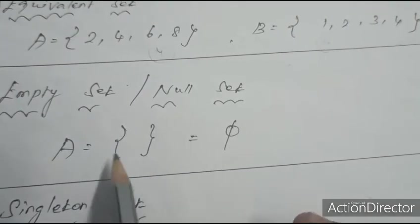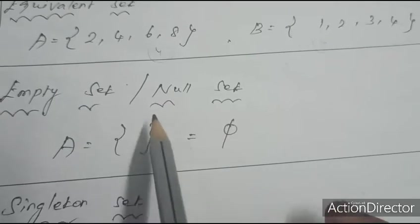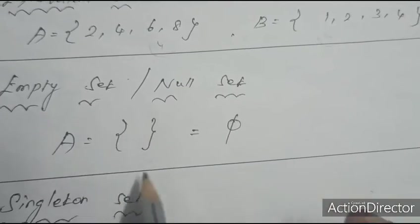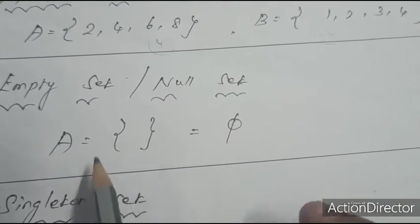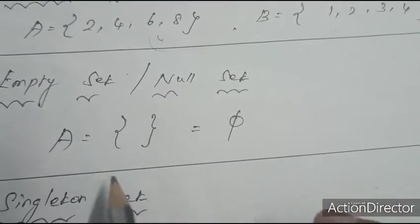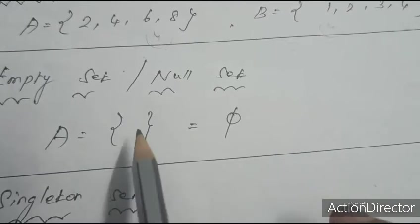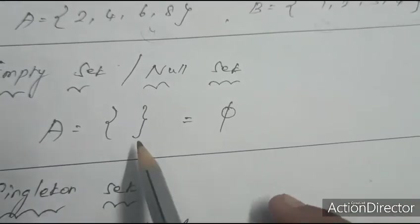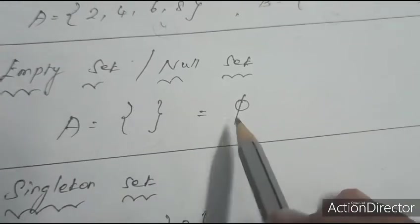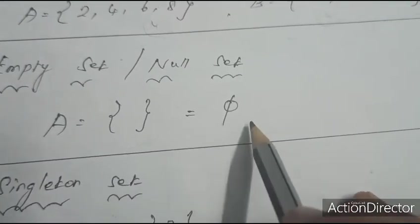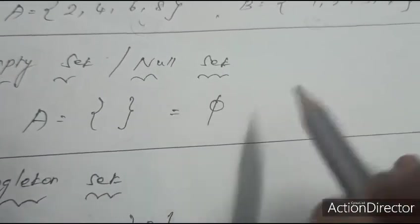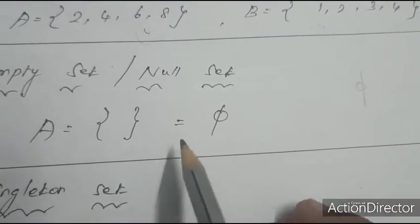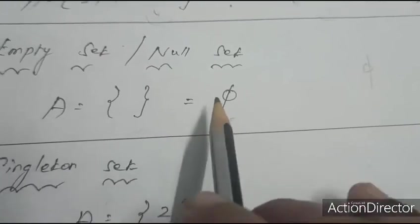Empty set or null set: a set with no element is called a null set. The symbol for null set is the empty set symbol or pi (∅). That is the symbol name for null set.